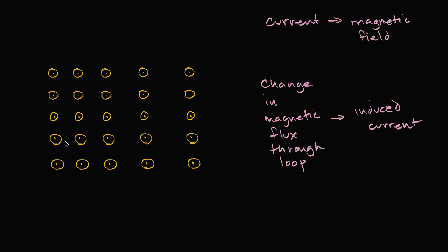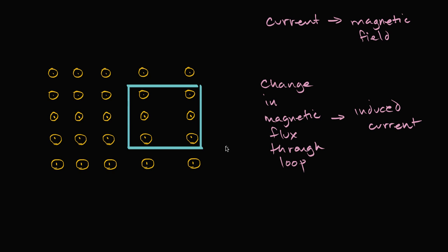Now let's introduce a loop of wire. If I just place that loop of wire stationary in this magnetic field and the magnetic field isn't changing, I do have some flux going through the surface defined by this wire. But if the wire is just stationary and nothing is changing, nothing is going to happen. I will only be able to induce a current if I change the magnetic flux going through this surface in some way.